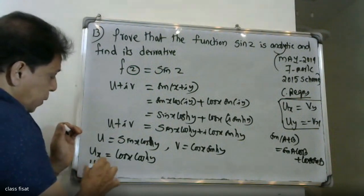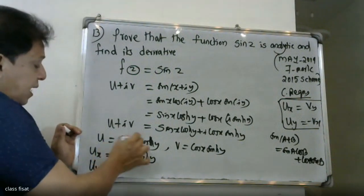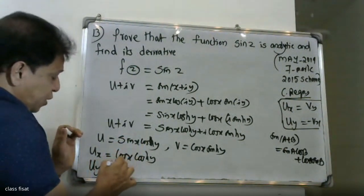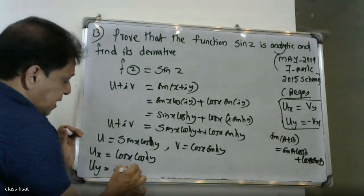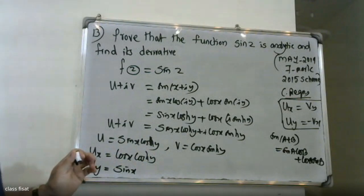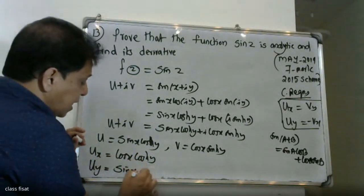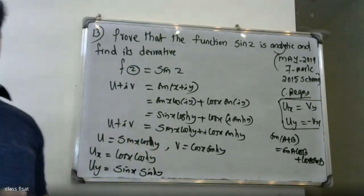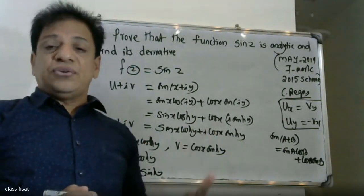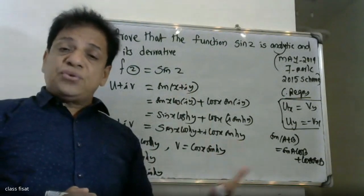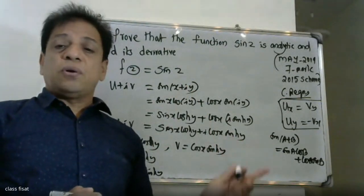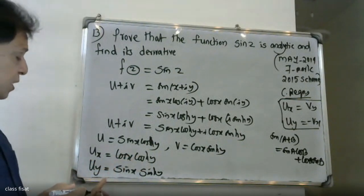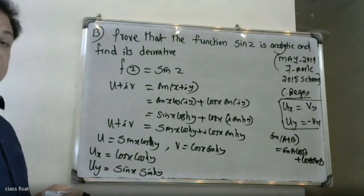Differentiating u with respect to y: sin(x)cosh(y) differentiated gives sin(x)sinh(y). The derivative of cosh(y) with respect to y is sinh(y), so uy equals sin(x)sinh(y).